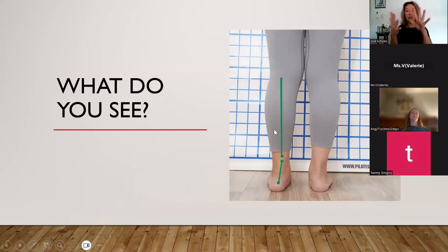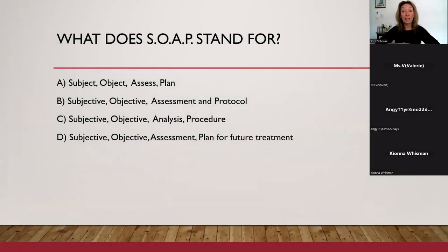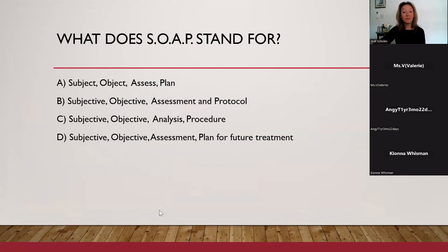If you have your client turn around and you've got this grid, you can see a flat foot — notice how the arch is affected. We're talking about client assessment and SOAP notes. What does SOAP stand for? A: Subject, Object, Assess, and Plan. B: Subjective, Objective, Assessment, and Protocol. C: Subjective, Objective, Analysis, and Procedure. D: Subjective, Objective, Assessment, and Plan for Future Treatment.